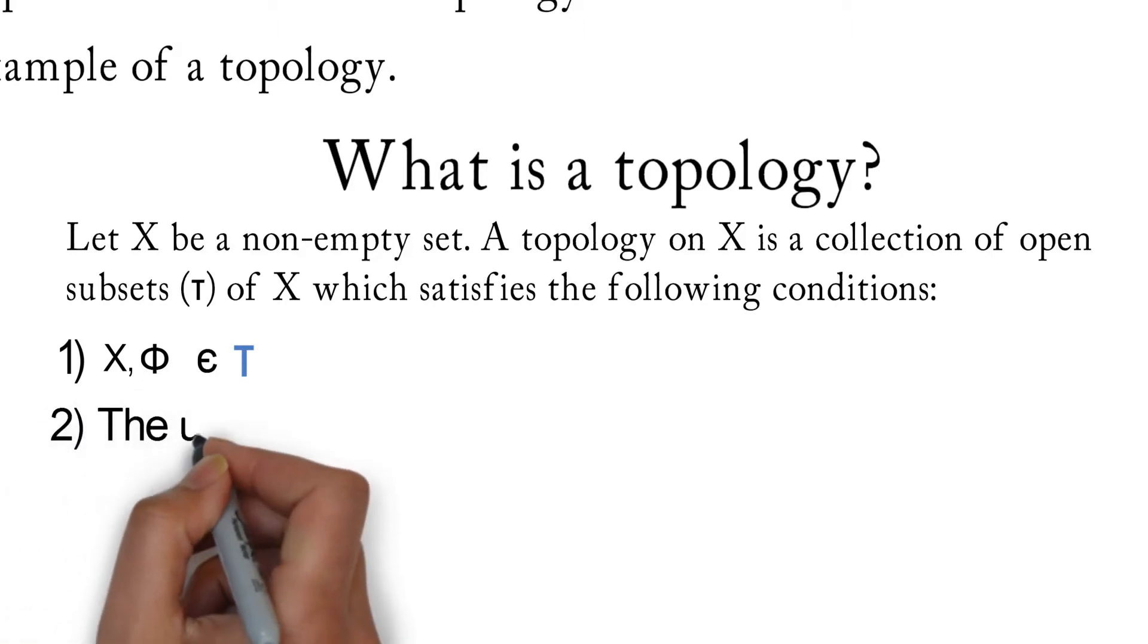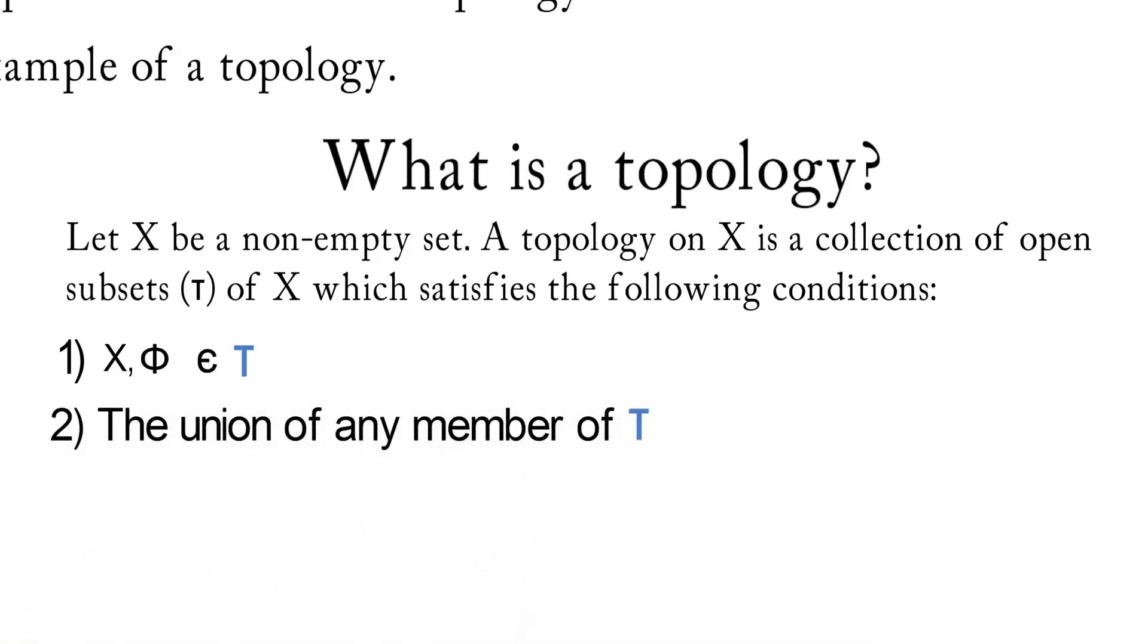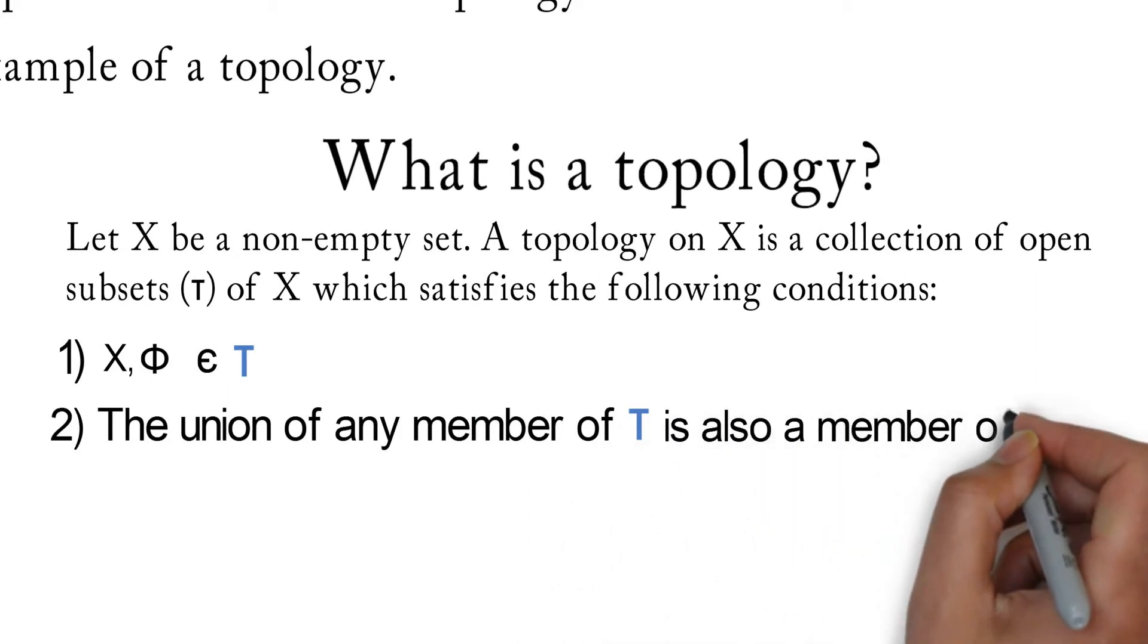Condition 2 states that the union of any member of tau is also a member of tau.